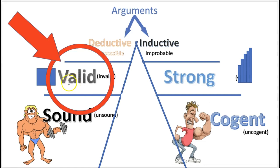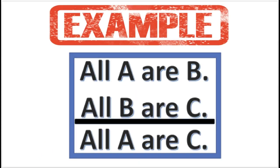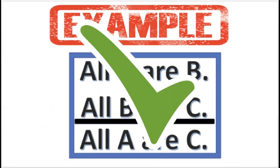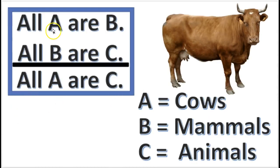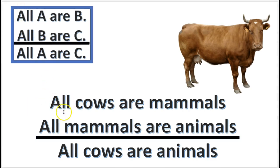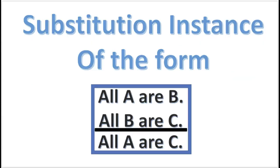An argument is either valid or invalid because of the argument form. Here's an example of the argument form: all blank are blank, all this are that, therefore all those are this. This is an argument form — all A are B, etc. Now, this is also an example of a valid argument form. If you substitute A for cows, B for mammals, C for animals, etc., whatever goes in the argument that you or someone else presents, you could take these terms and substitute them for something else. So this argument would be: all cows are mammals, all mammals are animals, therefore all cows are animals. When you substitute terms like this, it's called the substitution instance of the form.